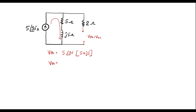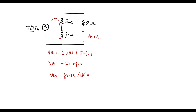Simplifying this directly using a calculator in complex mode gives -25 + J25, or in polar form: 35.35 at an angle of 135 degrees volts. This is Vth, that is the Thevenin voltage or open-circuit voltage.